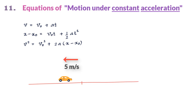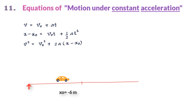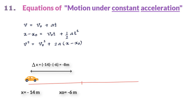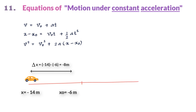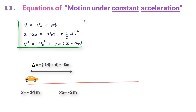For example, if x_0 equals minus 6 meters and x equals minus 14 meters, then displacement delta x equals x minus x_0 equals minus 14 minus (minus 6) equals minus 8 meters. Seeing the negative sign, we say the displacement is in the negative x direction, which indeed is the case. You can memorize these equations once you have understood how they are used.